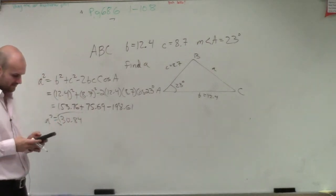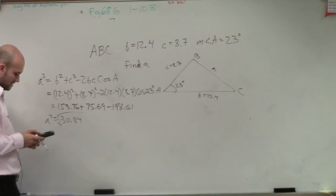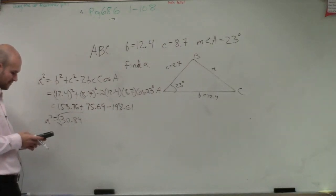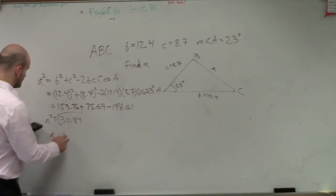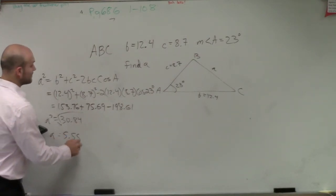I'm going to take the square root of 30.84, and therefore, a equals 5.55.